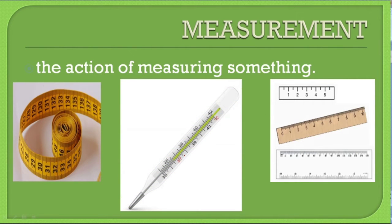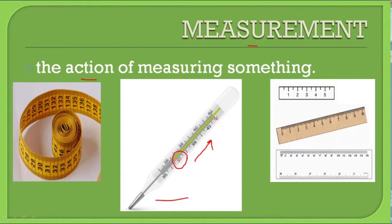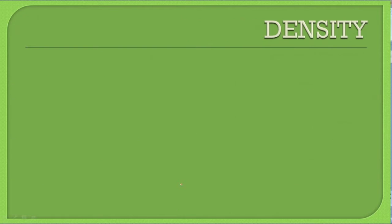Similarly we have a thermometer. Doctors and nurses use this to measure your body temperature. So what they are doing is some action, and that action is called measurement. You can see the red mark is at 37 degrees Celsius — that is your body's normal temperature. If it is more than this, you will have fever. If it is less than this, you will have cough and cold.